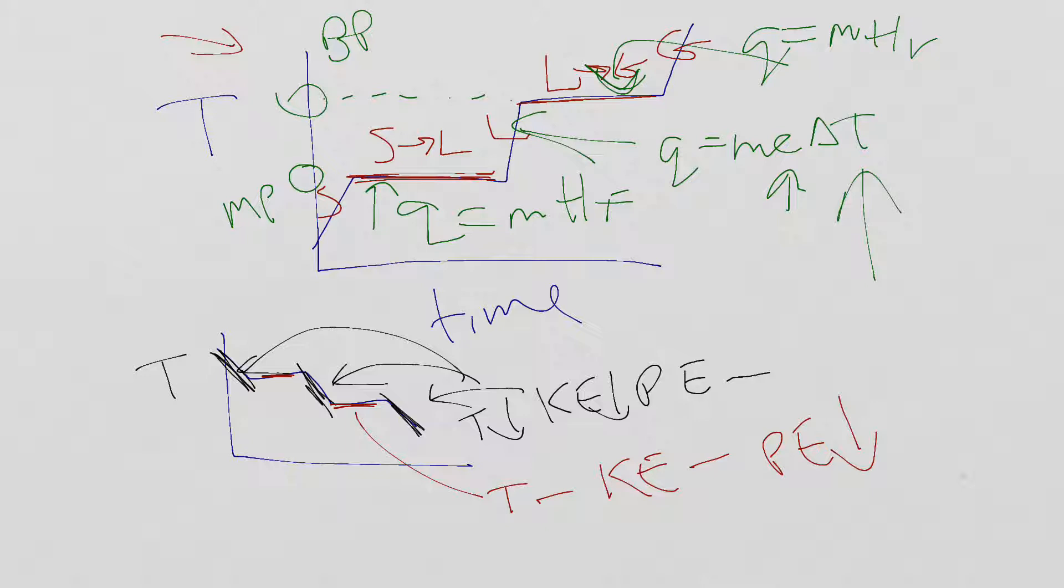If we were to look at temperature, kinetic and potential energy for our heating curve, let me draw a new one since this one's so messy. When I have a change in temperature at these diagonals, temperature in this case is going up. That means kinetic energy is going up, but potential energy remains constant.